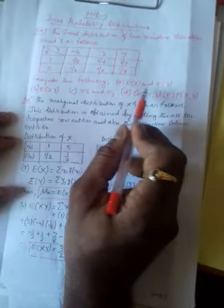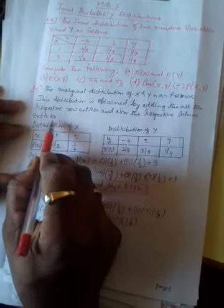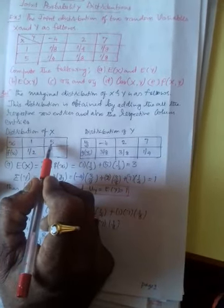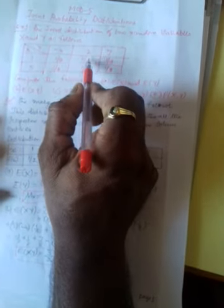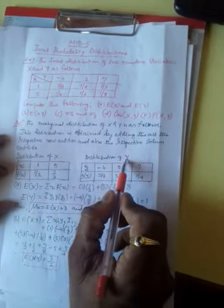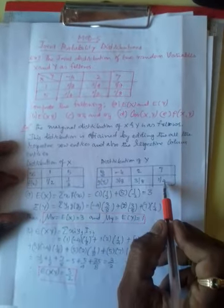Now to compute the required quantities, the marginal distribution of x and y is as follows. This distribution is obtained by adding all the respective row entries and also the respective column entries. For the distribution of x, the values are 1 and 5. The sum of the first row: 1/8 + 1/4 + 1/8 = 1/2. Similarly for x=5, sum of second row: 1/4 + 1/8 + 1/8 = 1/2. For the distribution of y, the values are -4, 2, and 7. The first column sum is 3/8, the second column sum is 3/8, and the third column sum is 1/4.